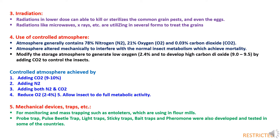The fifth physical method is mechanical devices and traps. Devices developed for monitoring and mass trapping include insulators used in flour mills. Other traps like probe traps, pulse beetle traps, light traps, sticky traps, bay traps, and pheromone traps have also been developed and tested in various countries.